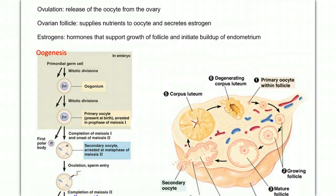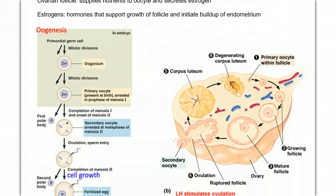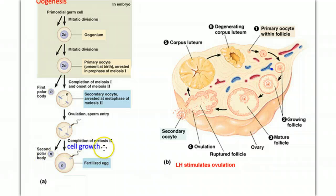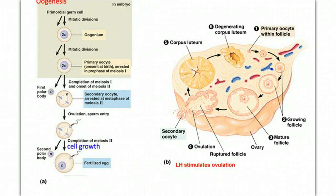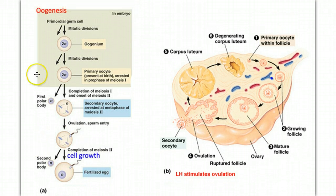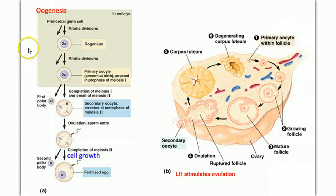During each cycle, one egg will mature and be released. The process will reoccur with regularity until a woman reaches menopause, then the end of her reproductive years. Let's look at the actual process by which an egg is formed — oogenesis — and contrast it with the process of spermatogenesis that we learned before.